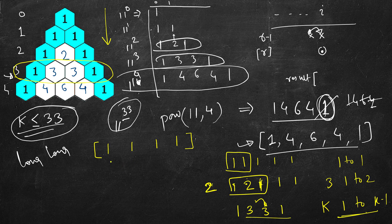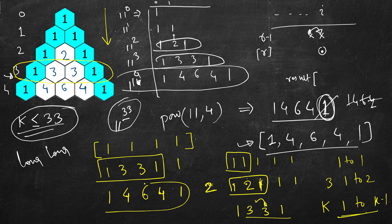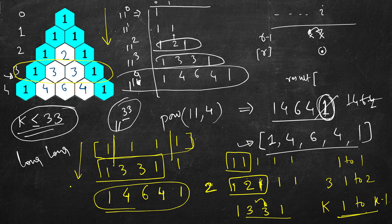Similarly for row four: starting from one three three one with an extra one initialized, we start from the last inner index, add the previous value to get four, move left to get six, then four. The ones remain. The advantage is we know the output size beforehand, initialize with ones, and run from index one to k minus one, adding previous values.